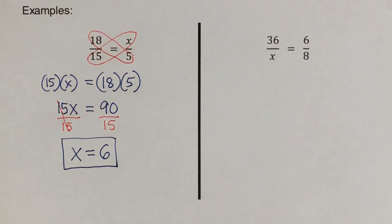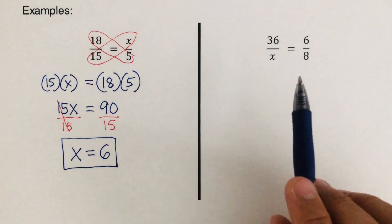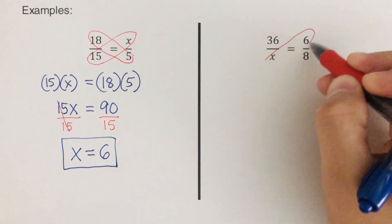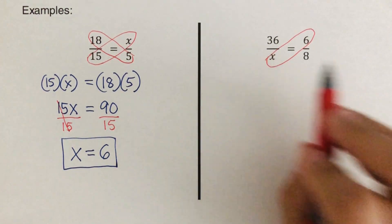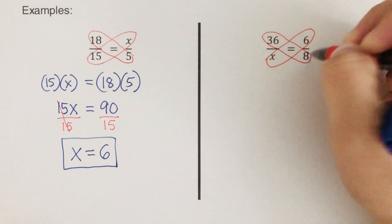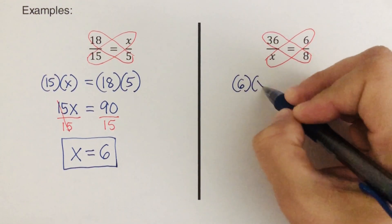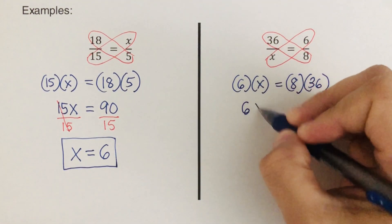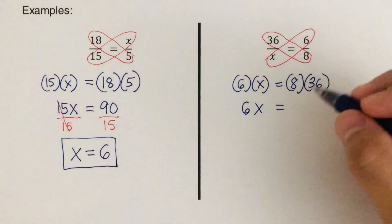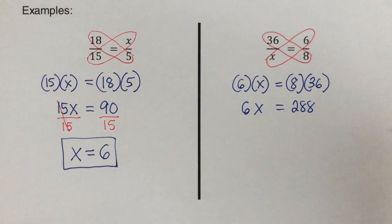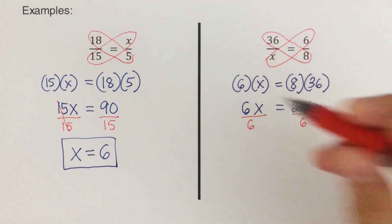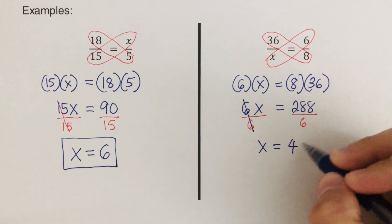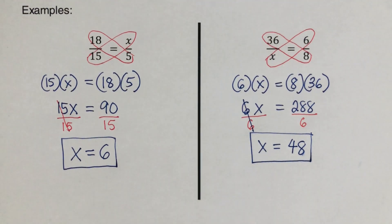Did you get 6? Good, perfect! Now let's move on to the last one. Again, some people multiply the wrong pair — do not do that. Instead, the partners are 6 and x, and then we have 8 and 36. So we simplify: 6x is equal to 8 times 36, which is 288. We divide both sides by 6, and x is equal to 48. Did you get 48 as the answer? Good, perfect!